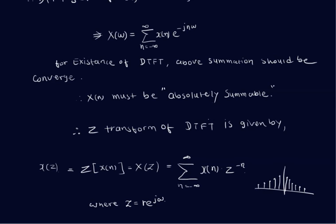The variable z used in the Z-transform is equal to r·e^(jω), where ω is the frequency of the sample and r is a constant indicating the magnitude where the function intersects the vertical axis. The meaning of r·e^(jω) and how this point arises will be discussed with examples in the next session.